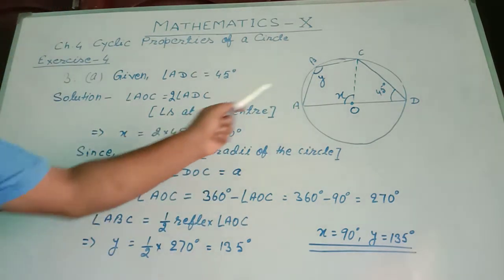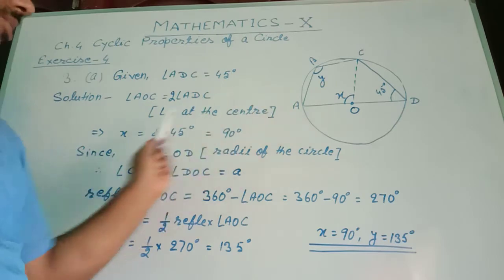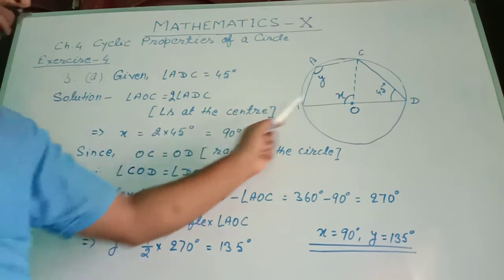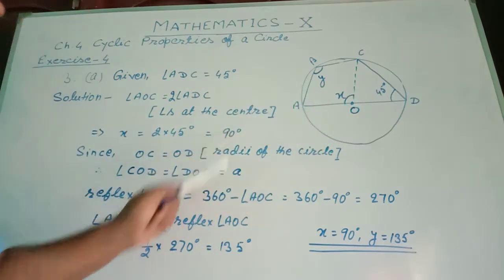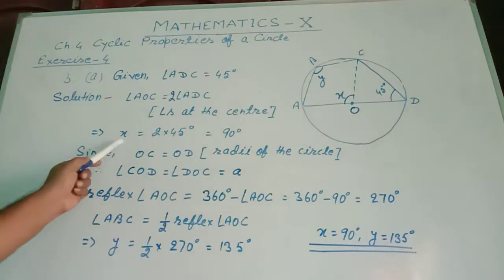Angle AOC is X. So X equals 2 times 45 degrees, which equals 90 degrees. Therefore, the value of X is 90 degrees.